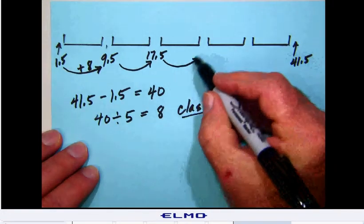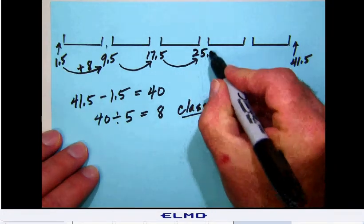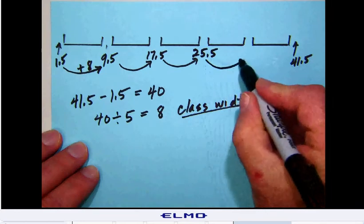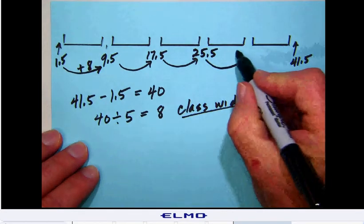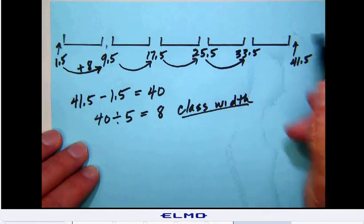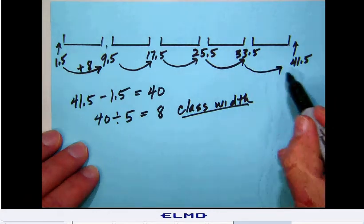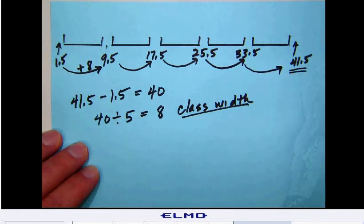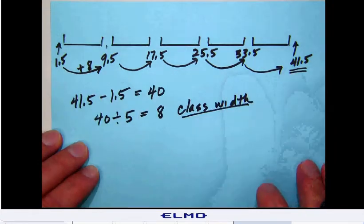Plus an additional 8 would be 25.5 plus an additional 8 would be 33.5 plus an additional 8 would remarkably give us the 41.5 that we should have for the ending. So this is a good way for us to check to make sure that our class width is correct.